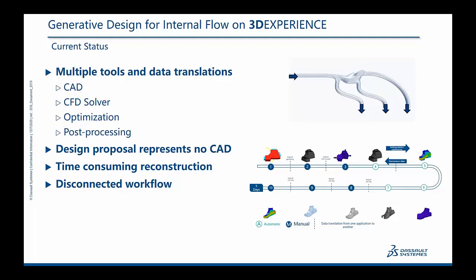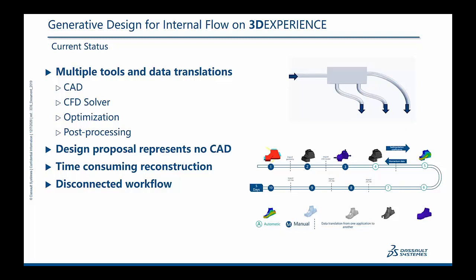With topology optimization you obtain a tailored, individual design suited to the available flow physics. As shown in the animation on the top right, it starts not from an existing design but from an available design space. The design is fully three-dimensional and individual, so this tool should be used in an early stage of the product development process. While topology optimization already plays a significant role in structural mechanics, it is still a niche application on the fluid side.